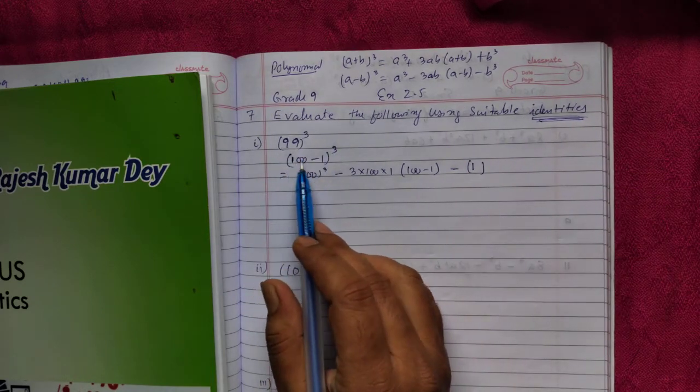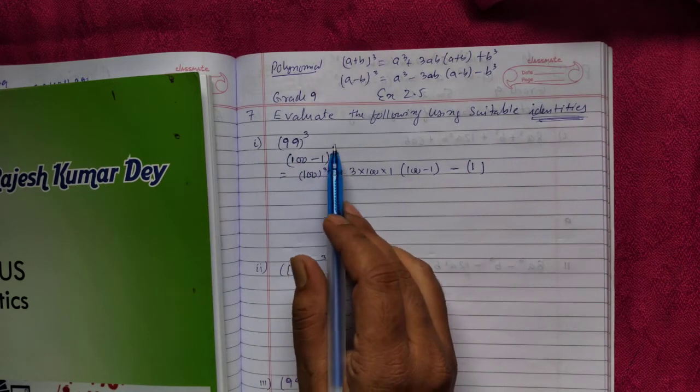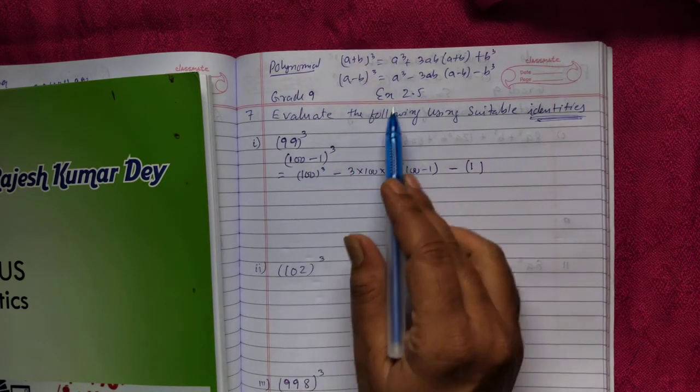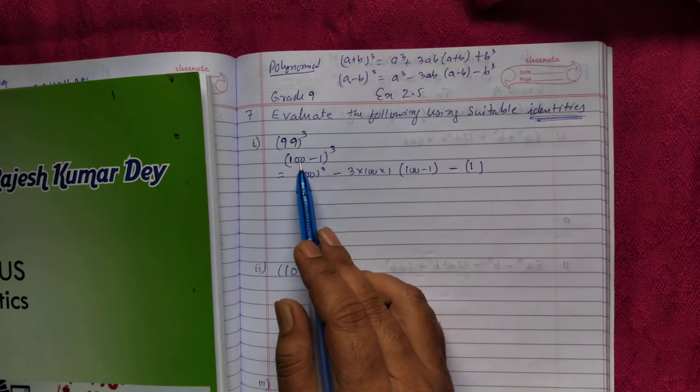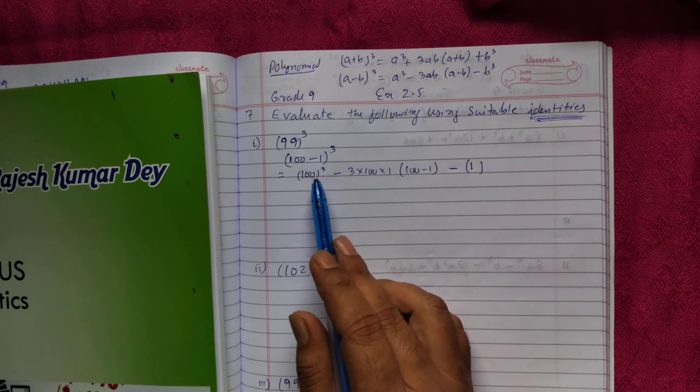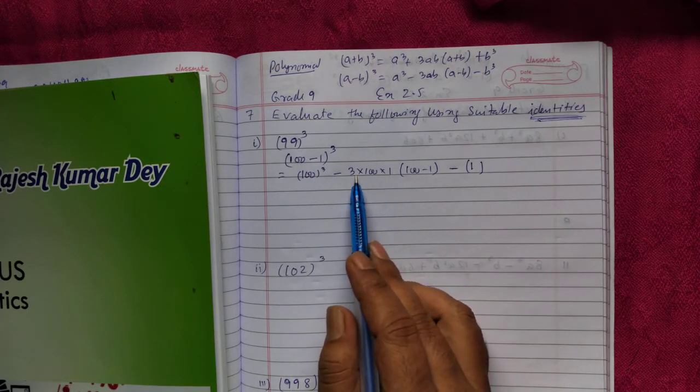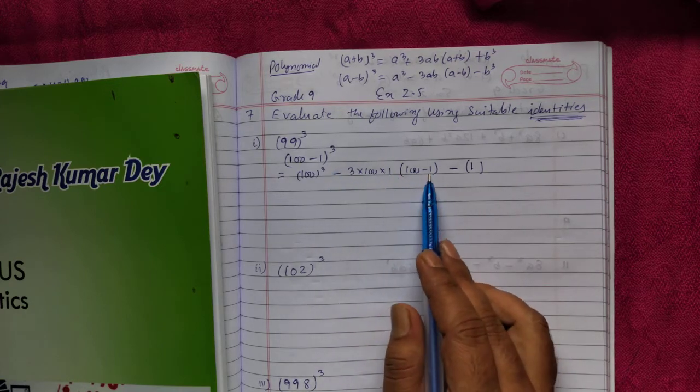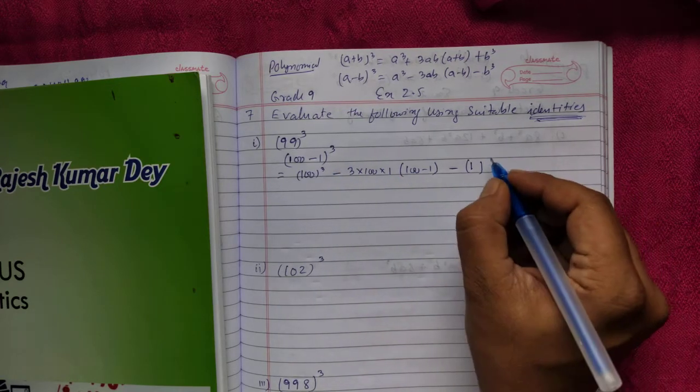So 99 means I can write 100 minus 1 whole cube. This is in the form of A minus B whole cube. So I can write A cube - that is 100, and B is 1. A cube means 100 cube minus 3AB - 3 into A is 100, B is 1 - bracket A minus B, that means 100 minus 1, minus B cube.